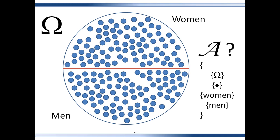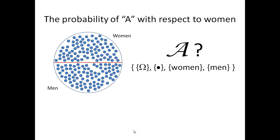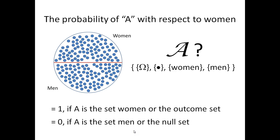So if you have a sigma algebra with only the outcome set, the null set, women, and men, then the probability of A with respect to women should be either 0 or 1. It would be 1 if A were the set women or the outcome set. It would be 0 if A were the set men or null set. But this is just simply not very interesting. You can only assign probability to events in the sigma algebra. Thus, the setup of the event set is very important.